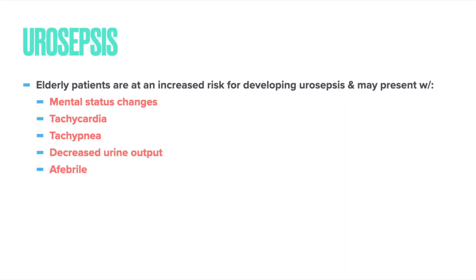Urosepsis is a potentially fatal complication of an untreated UTI. The infection travels to the kidneys, leads to organ dysfunction, and potentially organ failure. Elderly patients are at increased risk and present with more unique signs such as mental status changes, tachycardia, tachypnea, decreased urine output, and they are oftentimes afebrile.